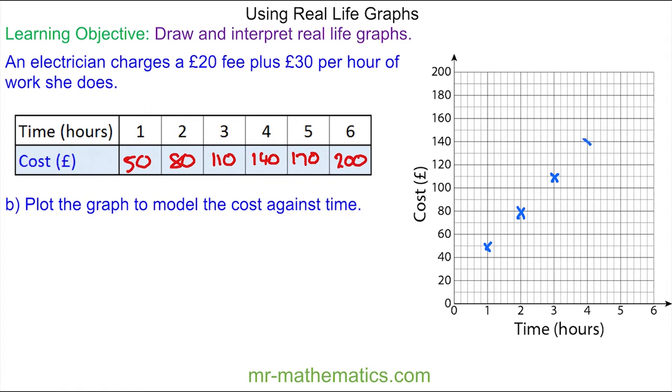So we have four and £140, five and £170, and six and £200. And we can join these points together to make our straight line graph. And you can see for zero hours we only pay the £20 call out fee. Okay, let's move on.